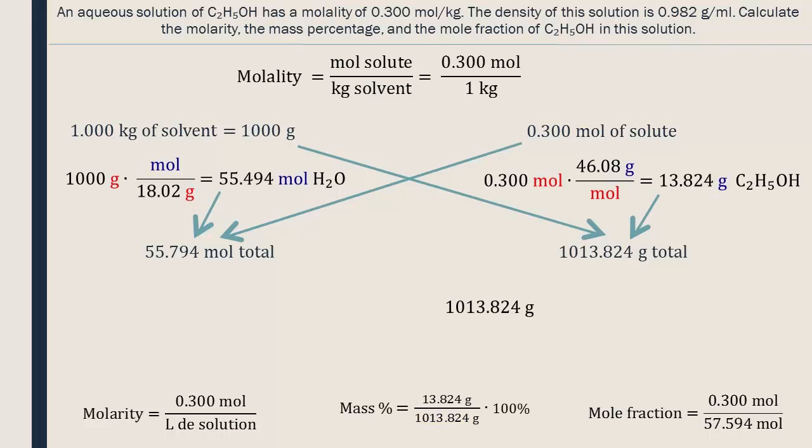Finally, we divide the total mass of the solution by the density that was given in the question, and we obtain the total volume of the solution. A common error is taking the 1000 grams of water as the total mass of the solution and multiplying this directly by the density. 1000 grams is only the mass of the solvent. The total mass must include the mass of the solute as well.